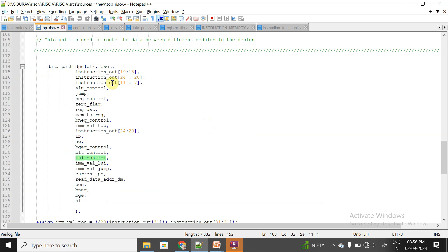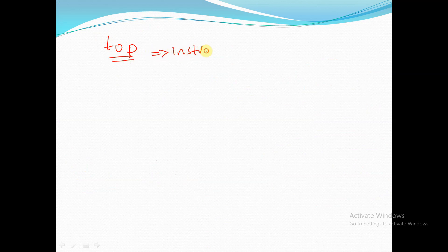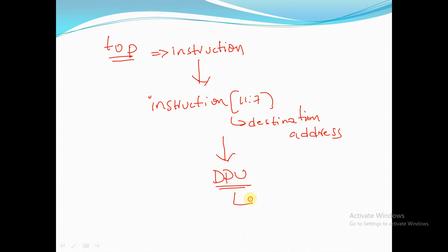Bits 11 down to 7 represent the destination address. In the top module, when we receive the instruction, we slice instruction[11:7] as the destination address and provide it to the DPU unit. From the DPU unit it goes to the RFU unit. This is how the write address — to which location the immediate data should be stored — is given to the register file unit.